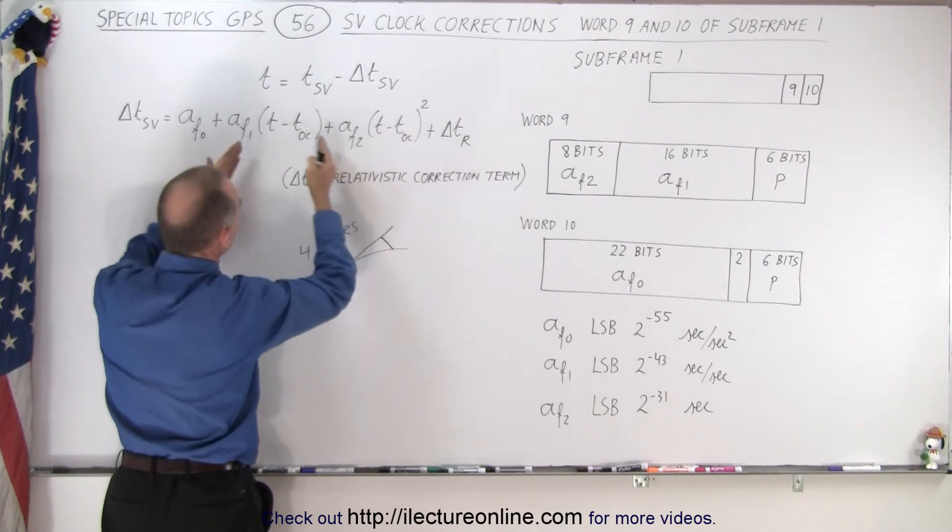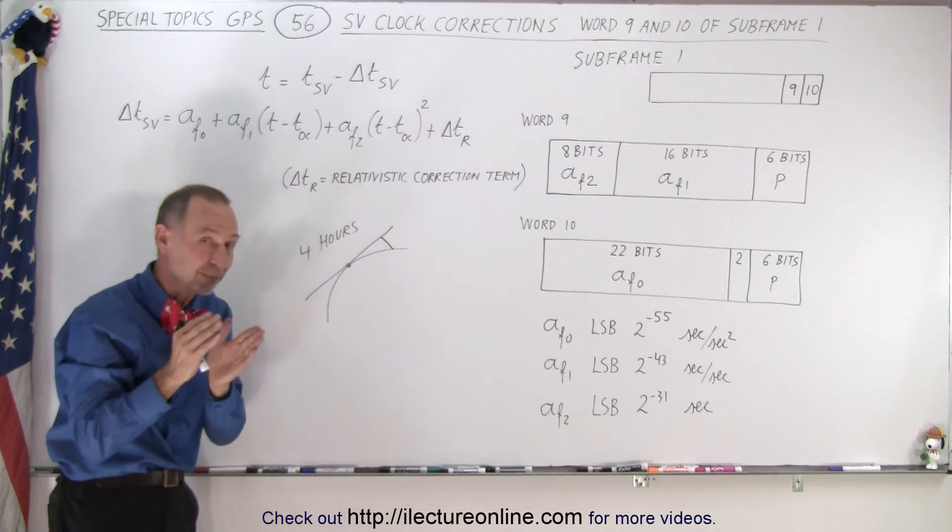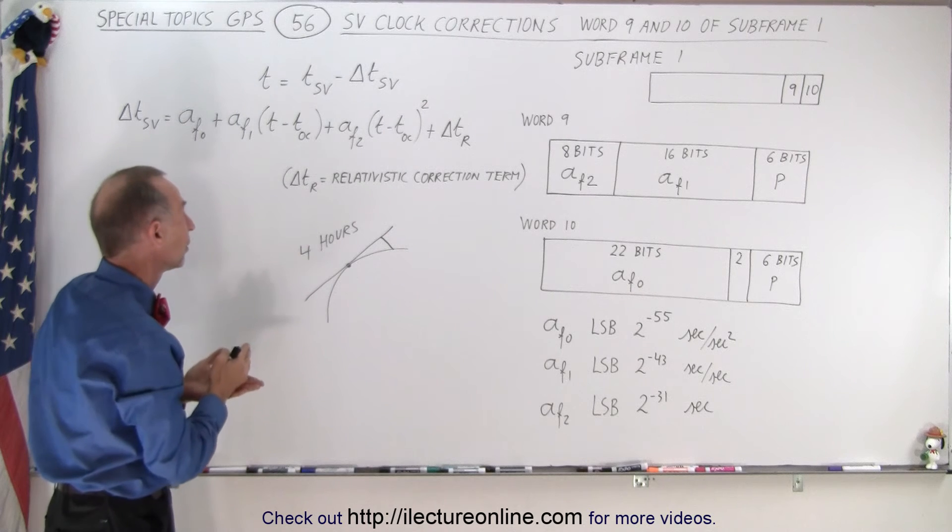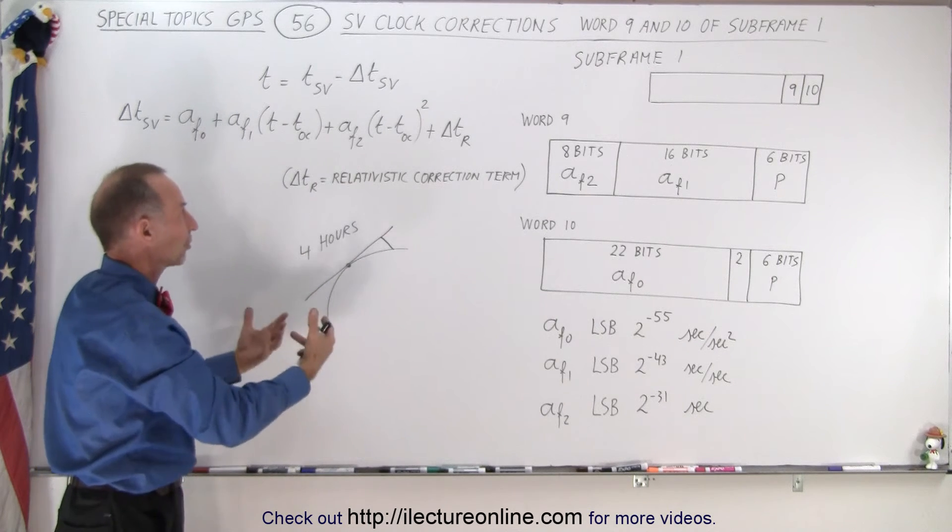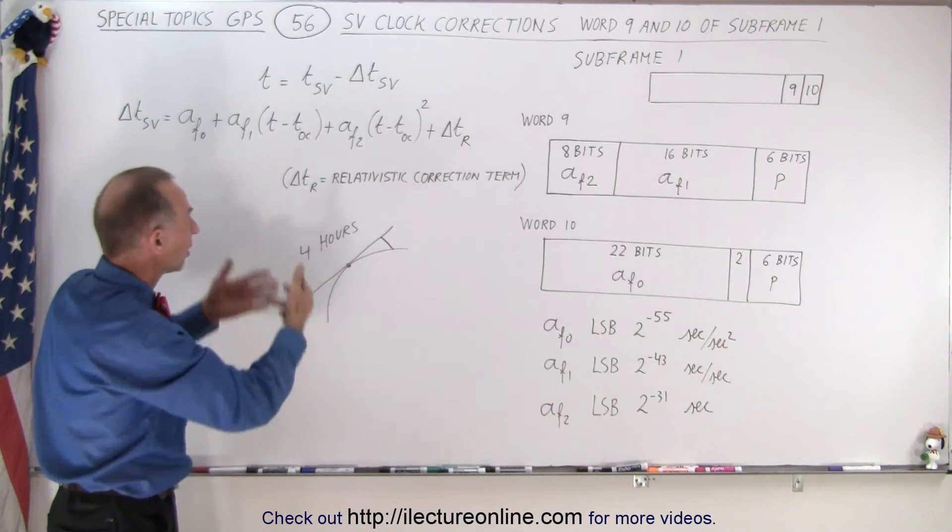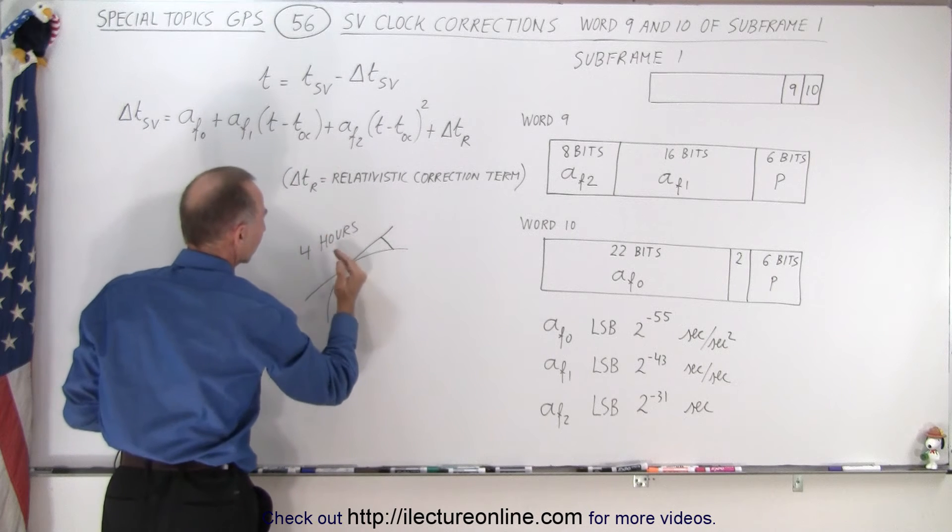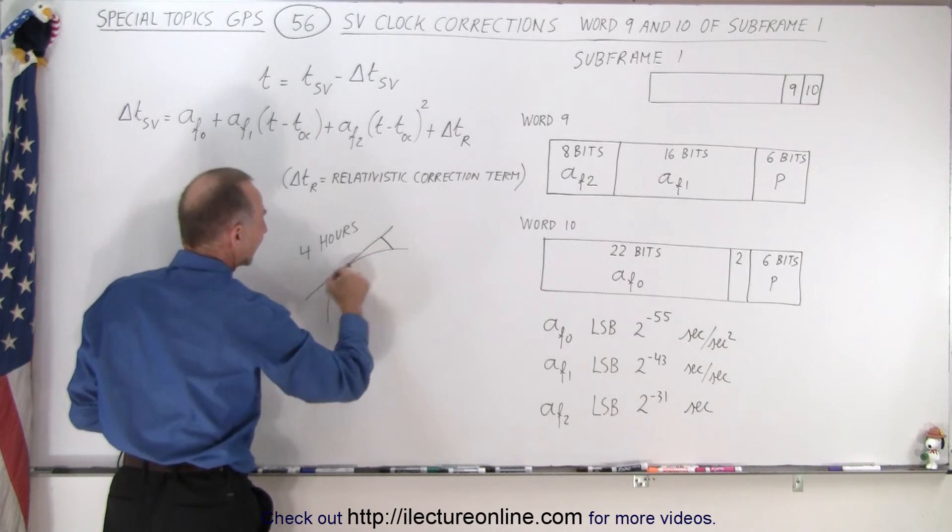So this is a quadratic equation where T minus TOC, how far we're off from that perfect time where we know the ephemeris data is perfectly accurate, well that becomes your variable X so to speak when you think of Y equals AX squared plus BX plus C. We have a similar format here where X is now the difference between the perfect spot on time and where we actually are in time.